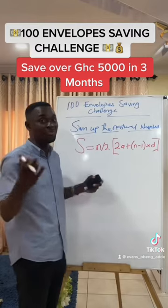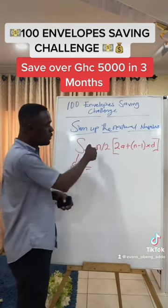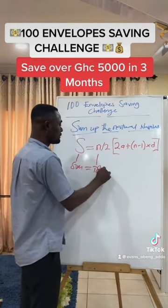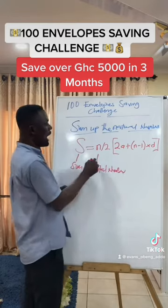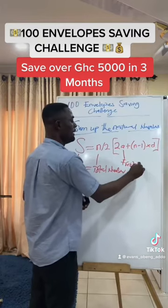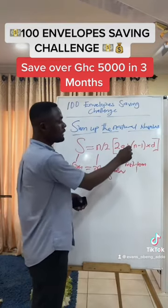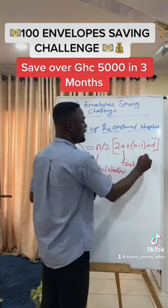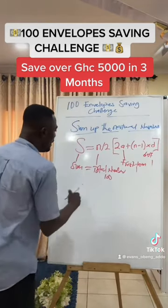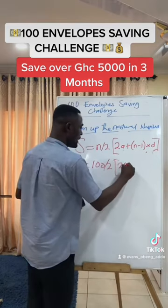Let me explain the formula. S is the sum — how much are we going to get. N is the total number, which is 100. A is the first term, which is 1. D is the difference between the numbers, which is also 1. So substituting: S = (100/2) × [2×1 + (100−1)×1]. At the end of the calculation, S equals 5050.